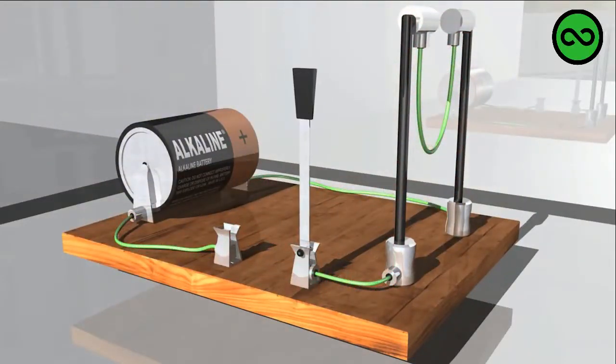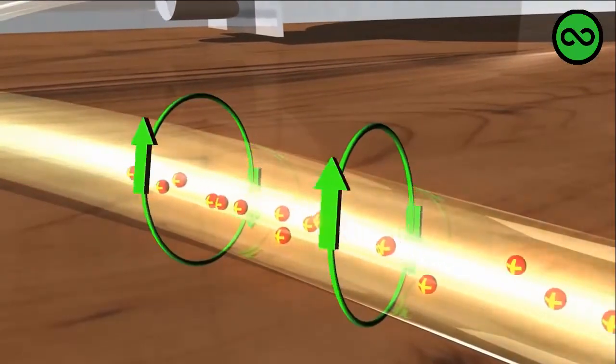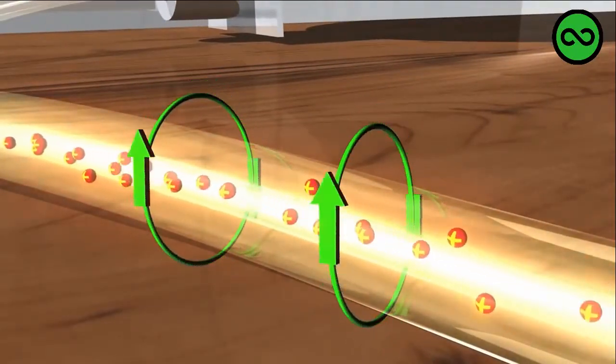If it's not moving, a charged particle doesn't create any magnetic field. But when it moves, it generates a little magnetic field around it, shown by these green arrows.